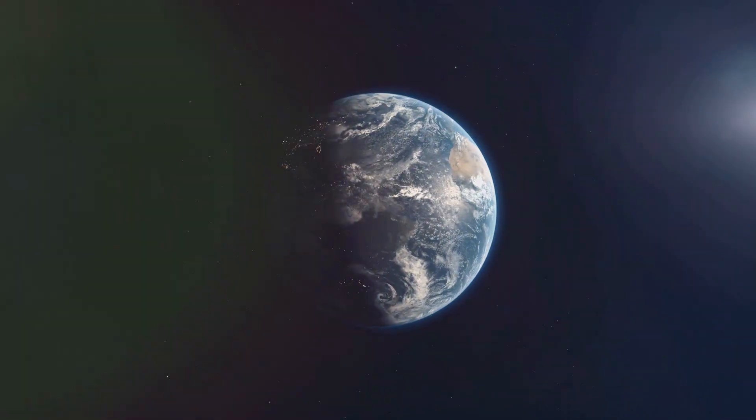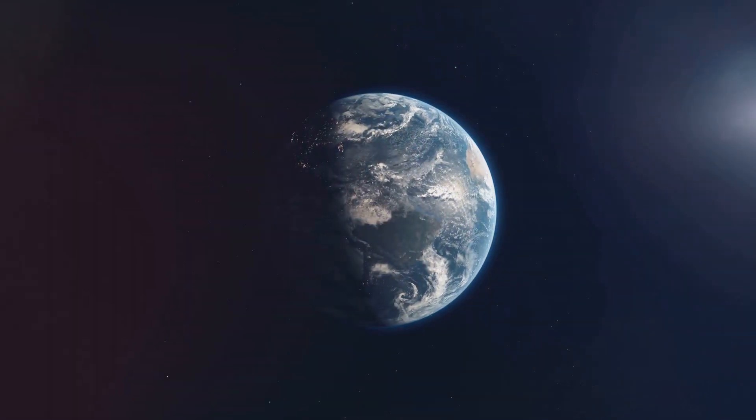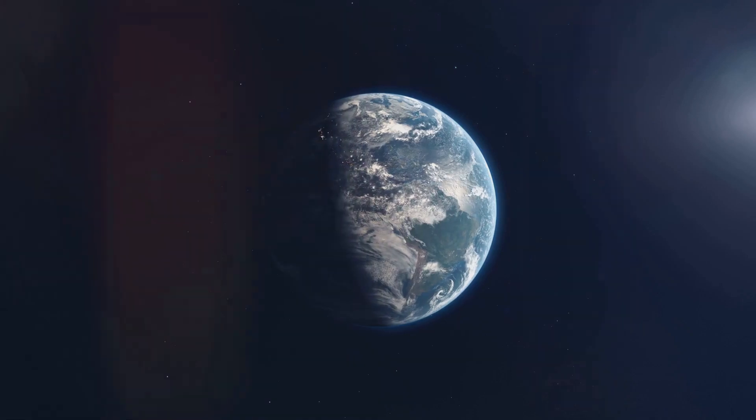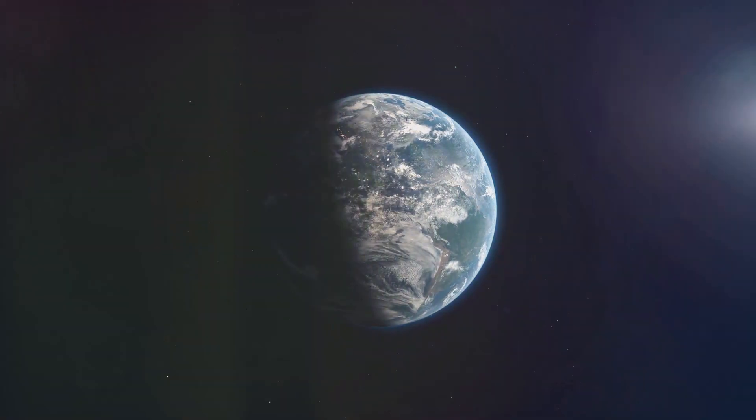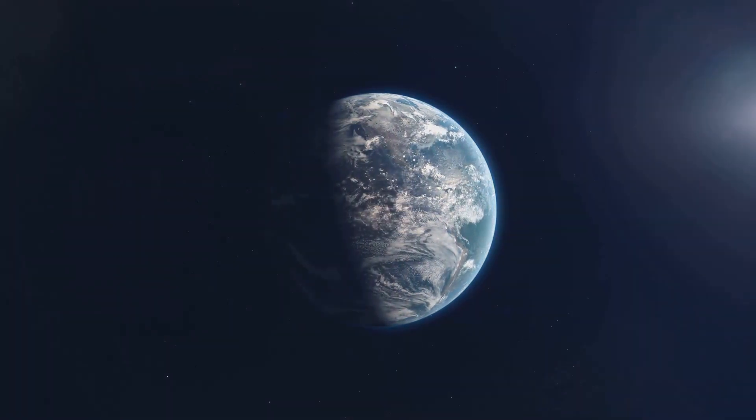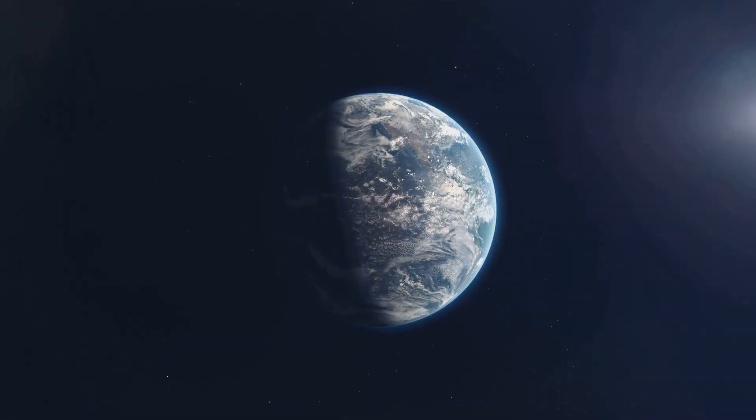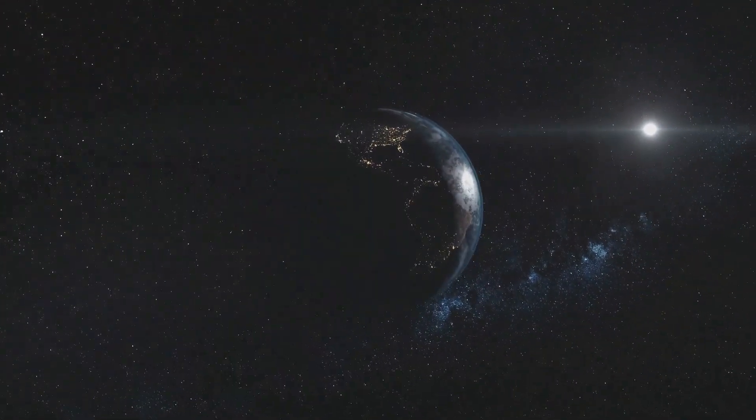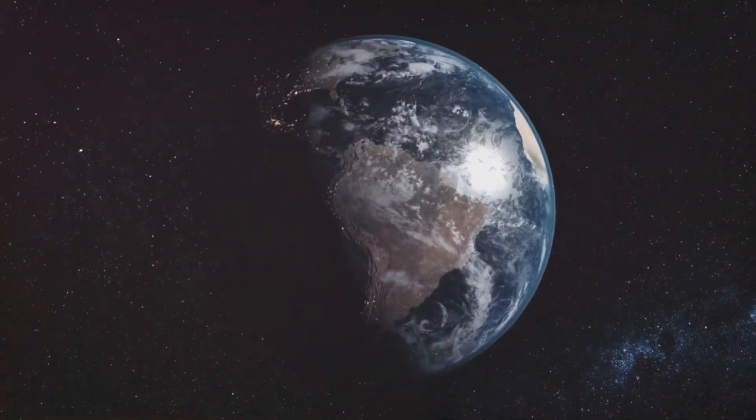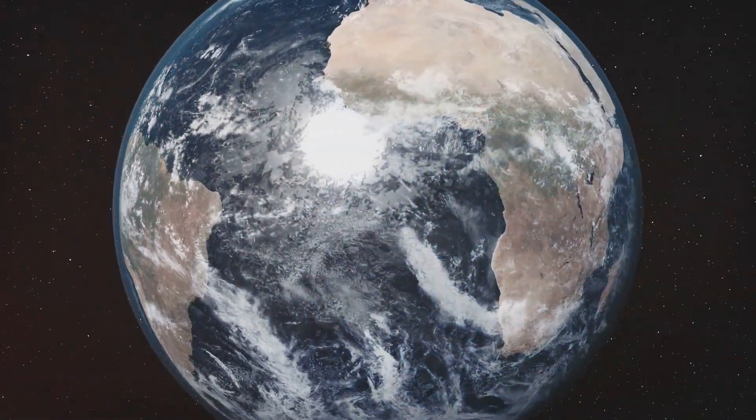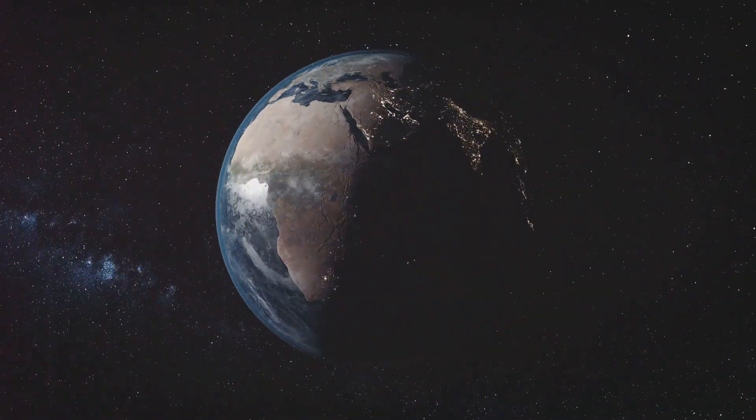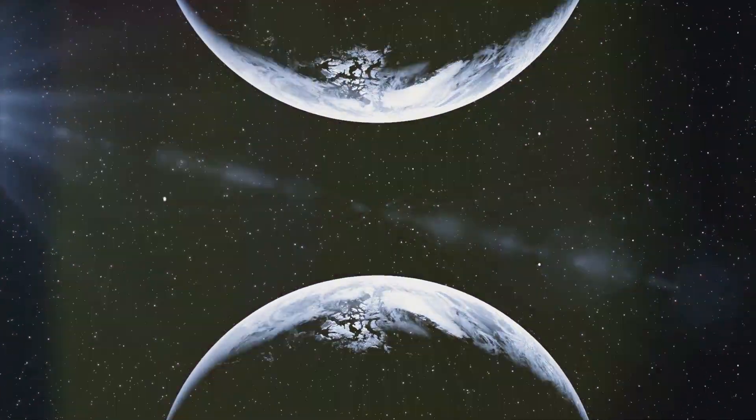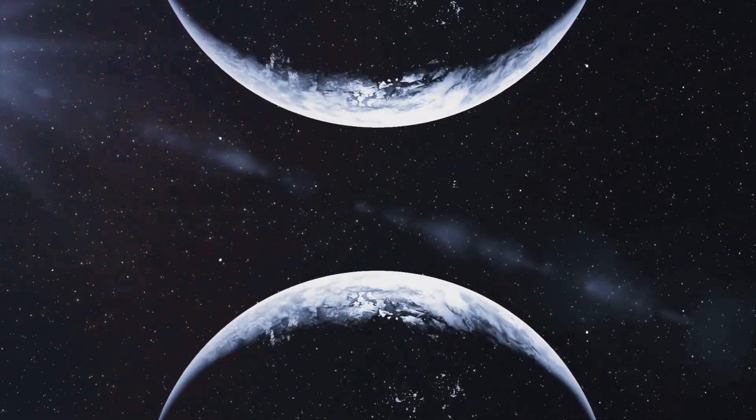Another fascinating aspect of Earth's motion is its axial tilt. The Earth's axis is tilted at an angle of about 23.5 degrees relative to its orbital plane around the Sun. This tilt is responsible for the seasonal changes we experience. When the Northern Hemisphere is tilted towards the Sun, it experiences summer, while the Southern Hemisphere experiences winter, and vice versa.